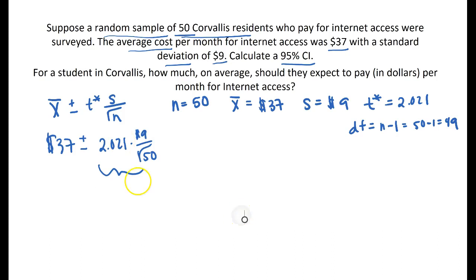The standard error comes out to be equal to 1.273 times our critical value is 2.021 and this makes up the ME or margin of error. That's going to come out to be equal to 2.572.